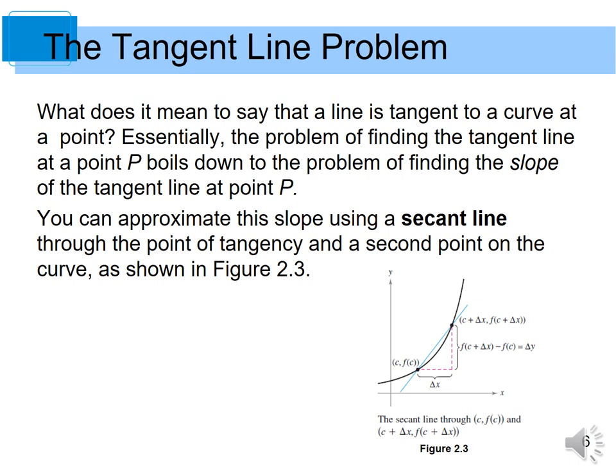What does it mean to say that a line is tangent to a curve at a point? Essentially, the problem of finding the tangent line at a point P comes down to the problem of finding the slope of the tangent line at a point P. You can approximate this slope using a secant line through the point of tangency and a second point on the curve.